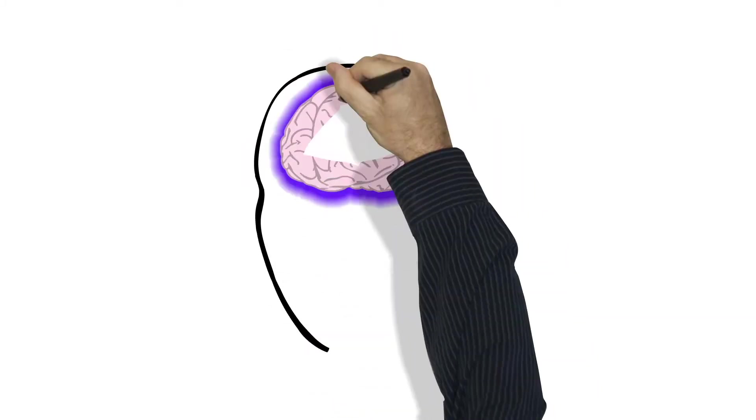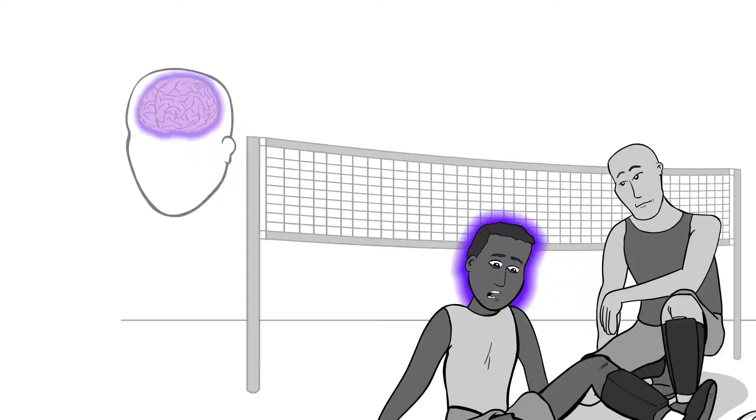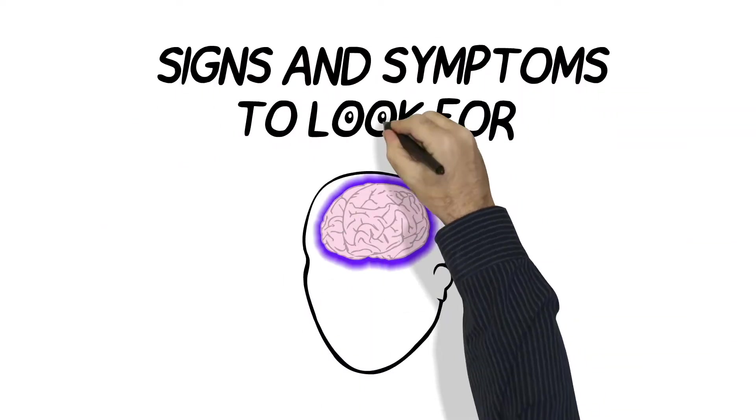Now, how can you tell if you or someone else might have a concussion? Most people don't lose consciousness when they have a concussion. Observed by a volleyball player kneeling close by, a hurt player sits on the ground, a purple haze around their head. So there are other signs and symptoms that you need to look for.